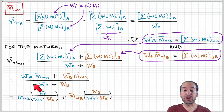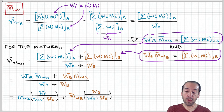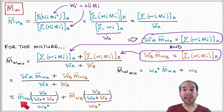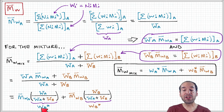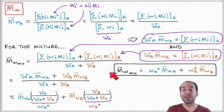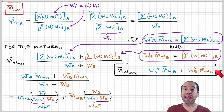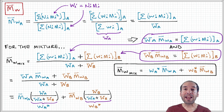If we factor out for each term this ratio of weights, we obtain an expression where we have the weight average molecular weight for each of polymer A and polymer B times its weight relative to the total weight of polymer in the sample — these are the weight fractions. W_A over the total weight is the weight fraction of A, denoted W_A*. W_B over the total weight is the weight fraction of B, denoted W_B*. The final expression for the weight average molecular weight of the mixture is the weight fraction of A times its weight average molecular weight plus the weight fraction of B times the weight average molecular weight of B.